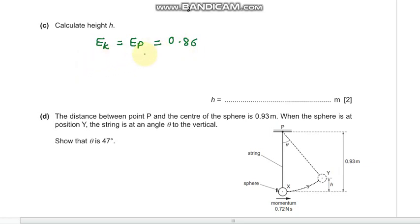So what you can do is equate 0.86 to mgh. Our m is 0.3 kg, g is 9.81, and h we need to find equals 0.86. So our height becomes 0.2922.